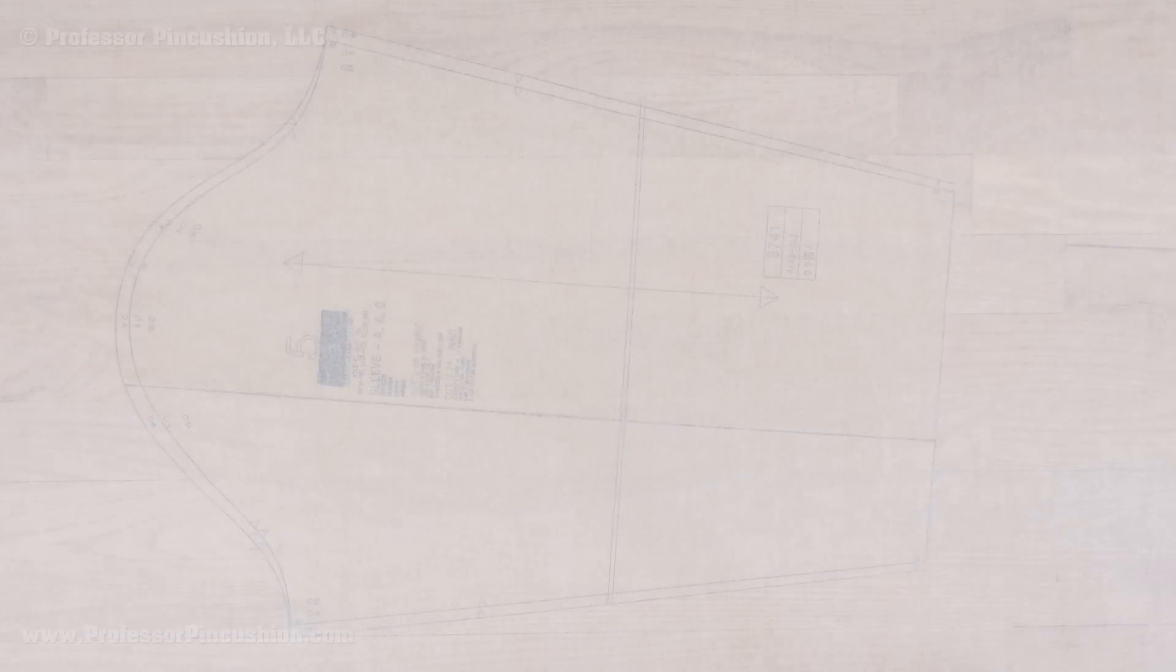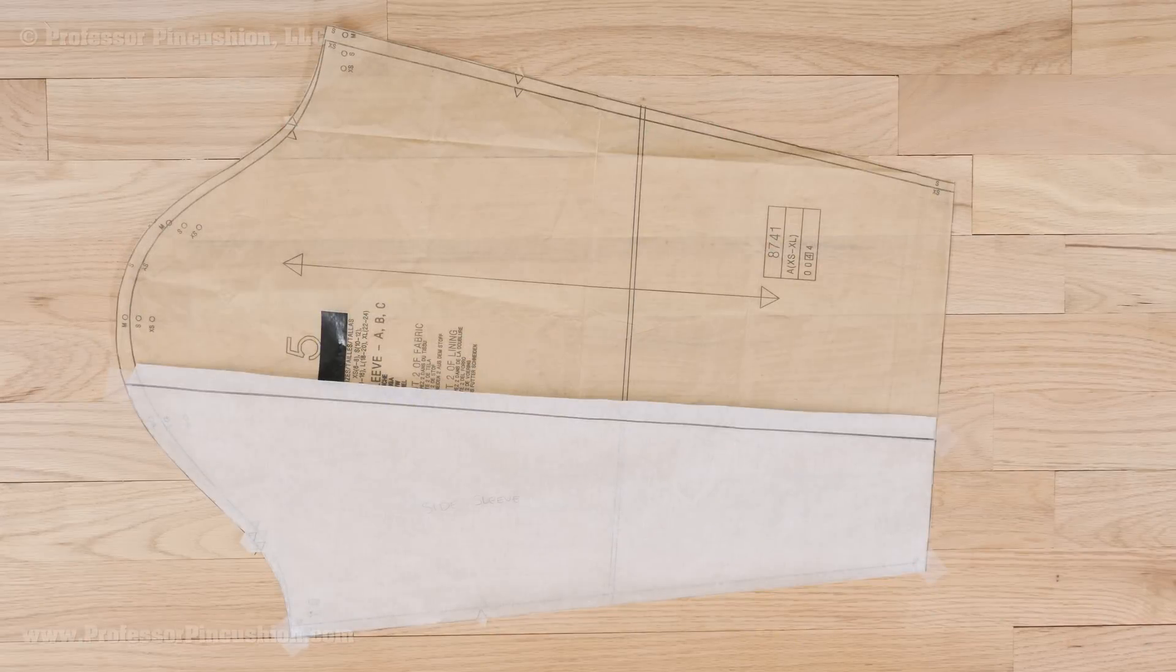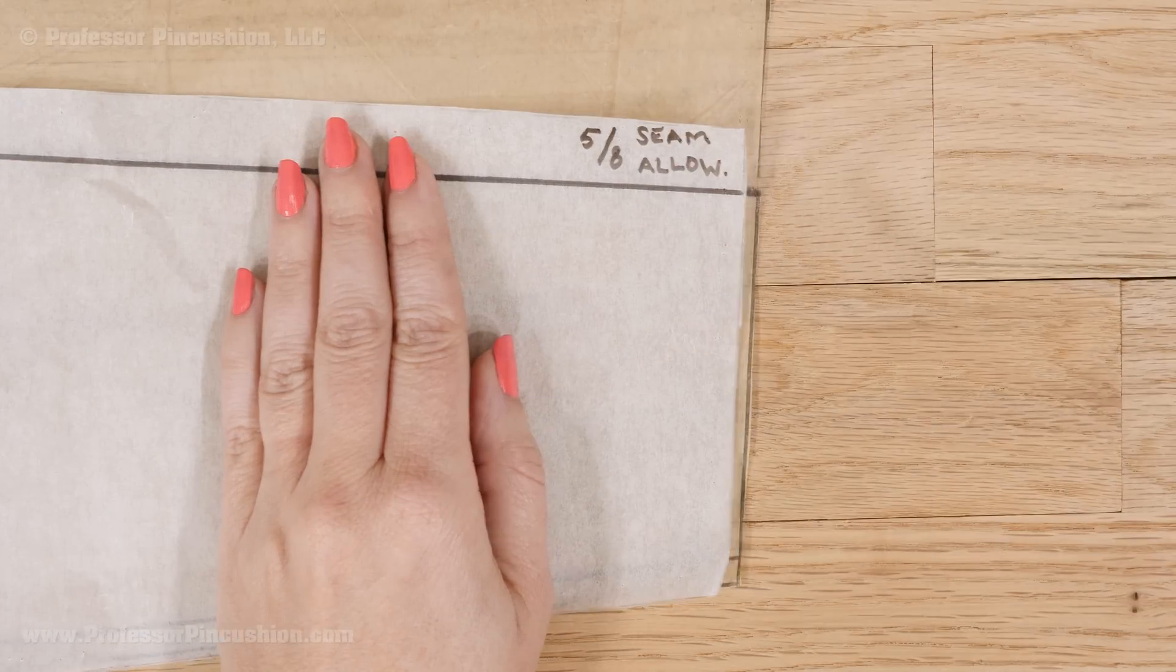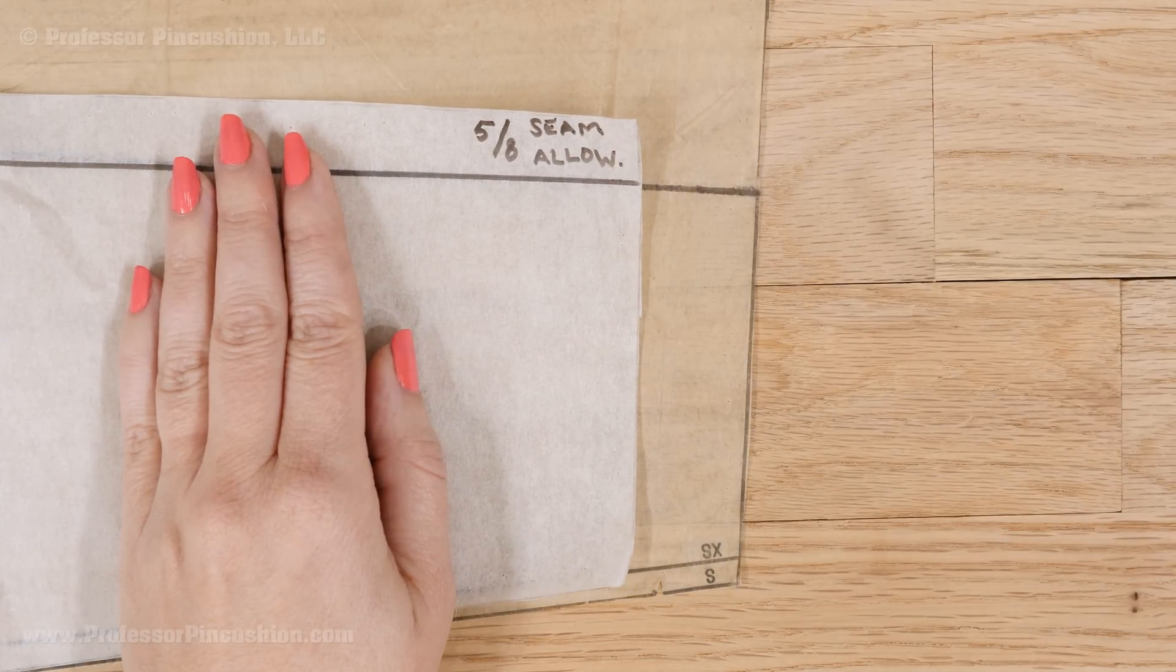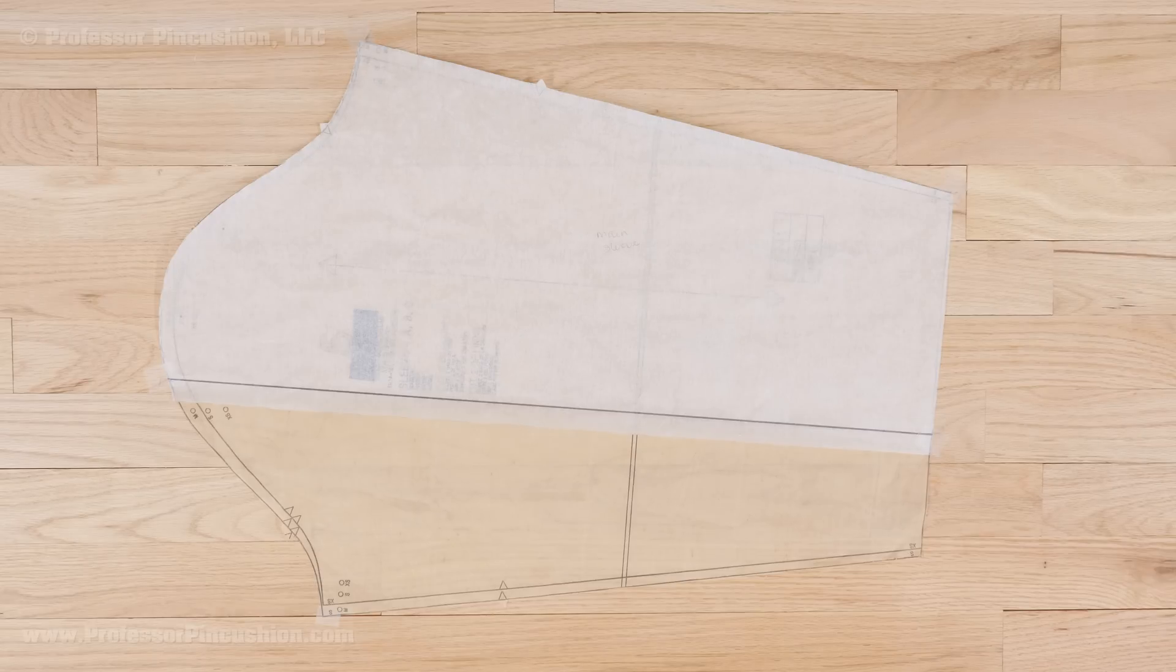Lay tissue paper over your pattern and trace around the first part of the pattern. At the line, you'll want to make sure to add seam allowance, so in my demonstration I'll add a typical 5/8 of an inch past my drawn line. I'll repeat this process for drawing the other side of the pattern on my tissue paper and again add seam allowance past the drawn line.